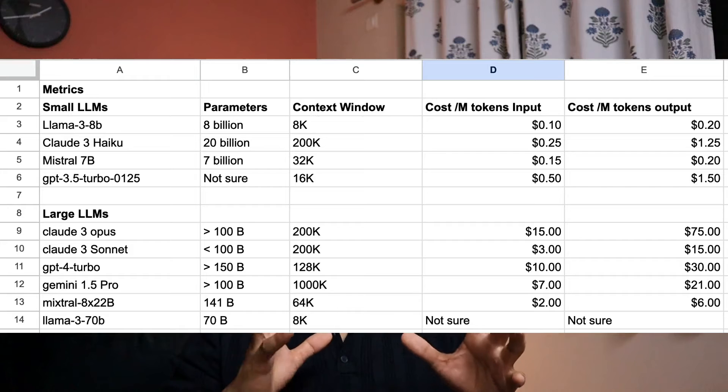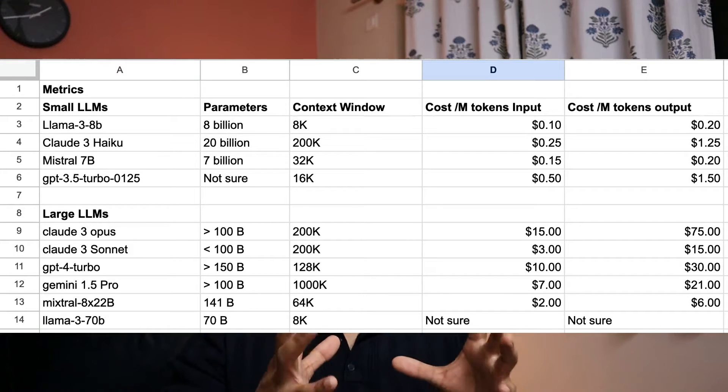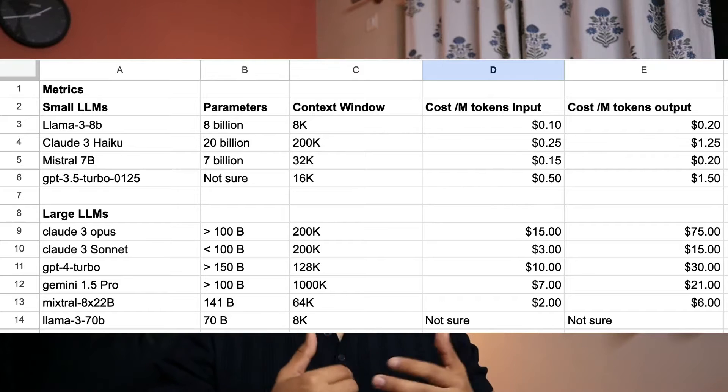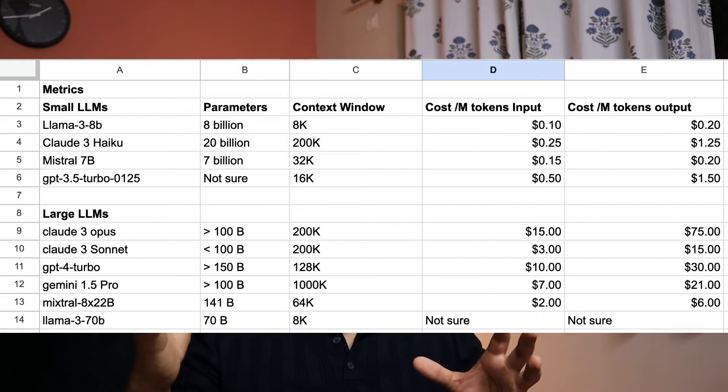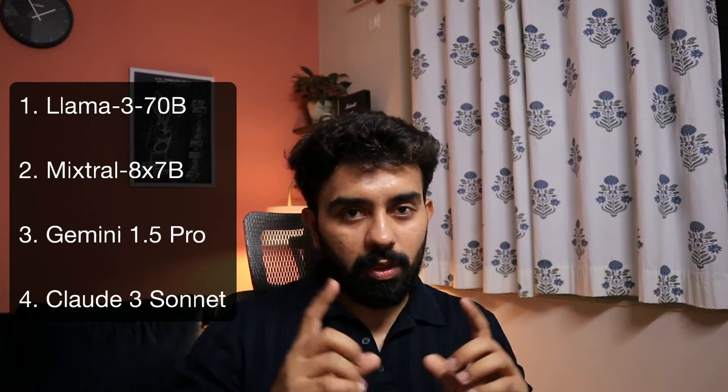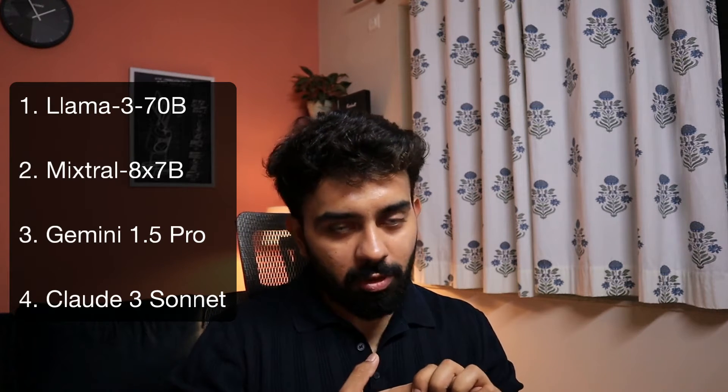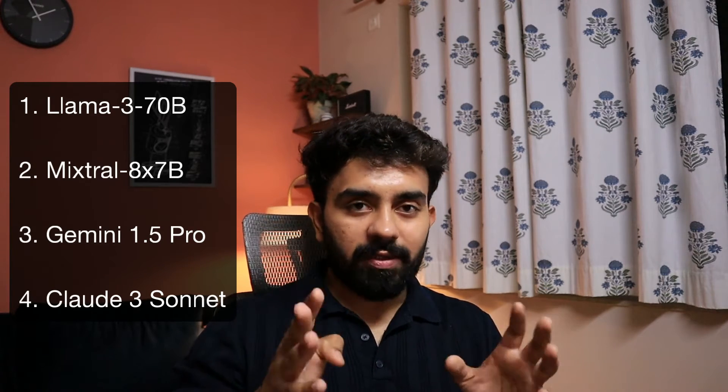I compared them, looked at their costs, and all of those things. I figured out that I needed a cheaper alternative — I can't go with GPT-4 Turbo because that will cost more, and I can't go with Claude 3 Opus because that is also very expensive. So I ended up picking four models to evaluate for content creation: Llama 3 70 billion, Mixtral 8x7 billion, Gemini 1.5 Pro, and Claude 3 Sonnet.